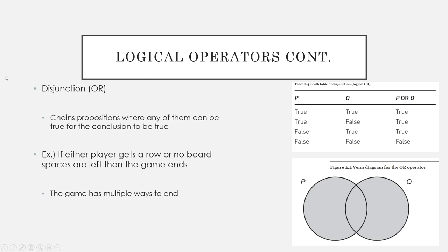Disjunction, or logical OR, chains propositions where any of them can be true for the conclusion to be true. It doesn't matter if they're both true or only one is true — as long as at least one is true, the conclusion can be true. For example: 'if either player gets a row OR there are no board spaces left, then the game ends.' Looking at the truth table for logical OR, only if P and Q are both false will the result be false.